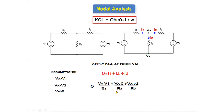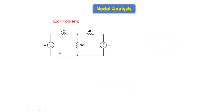After writing these equations we solve for the unknown node voltage Va. Now let's take an example problem. The sample circuit consists of three resistors: 2 ohm, 3 ohm, and 4 ohm, and two voltage sources: V1 = 10 volts and V2 = 15 volts. We will apply nodal analysis to this circuit.